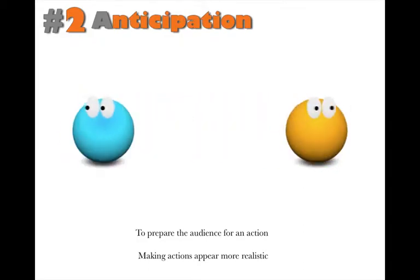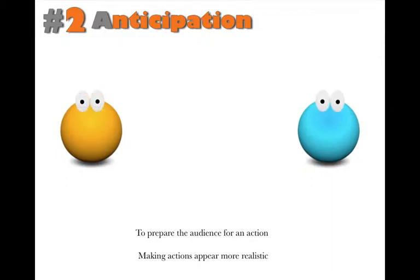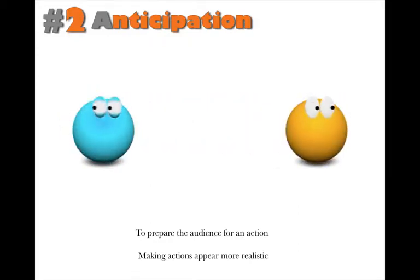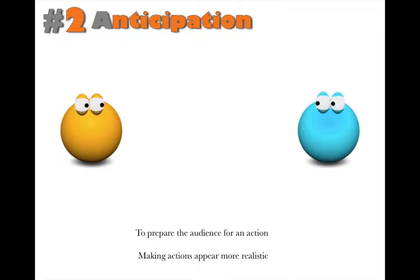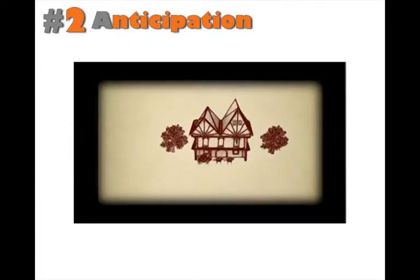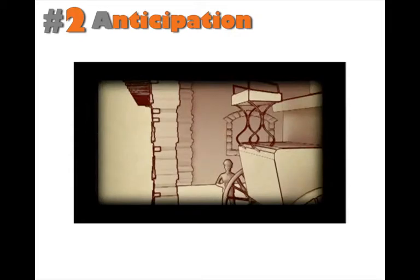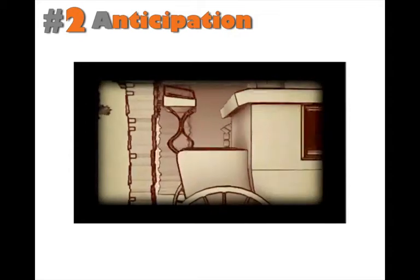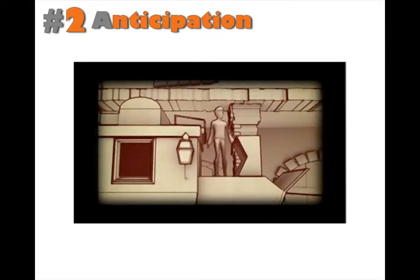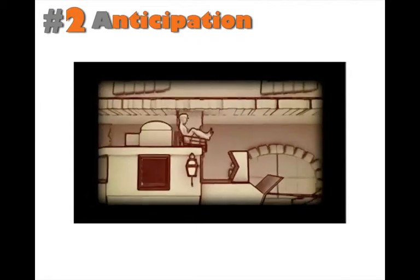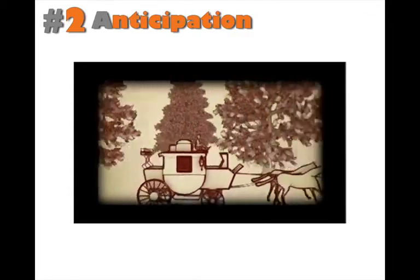Take, for instance, when someone punches something — they don't suddenly throw their fist out. They usually pull a facial expression, wind back, their body becomes rigid, and then the punch happens. That moment of anticipation gives it a realism. In this S4C animation, it's full of moments of anticipation — the little boy looks around, jumps off, the camera jumps forward, he climbs up, takes another look around, flips up onto the seat, looks around again, and then everything starts happening.